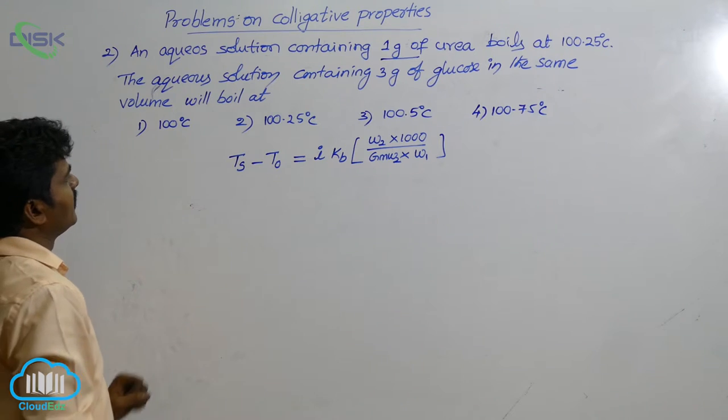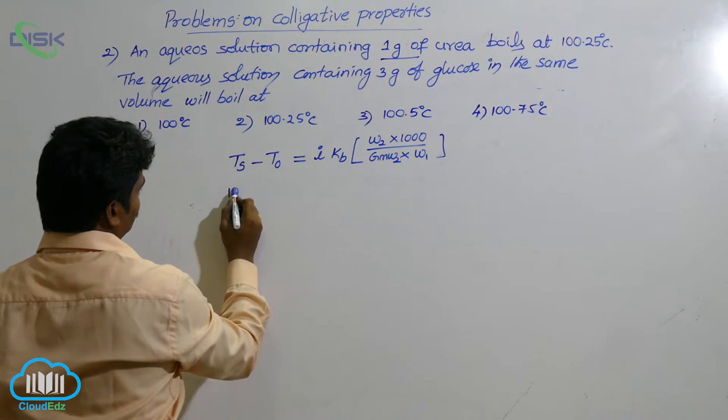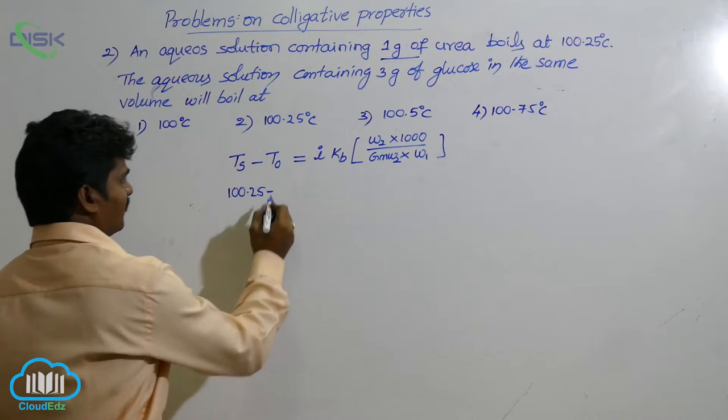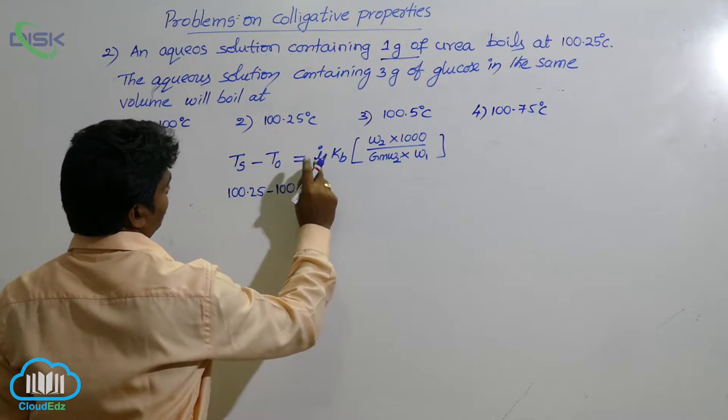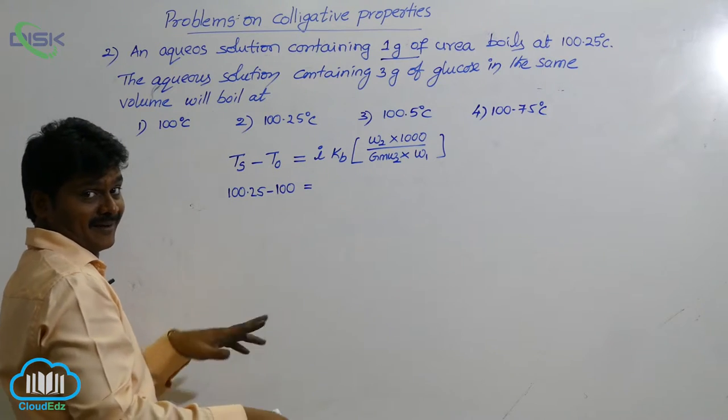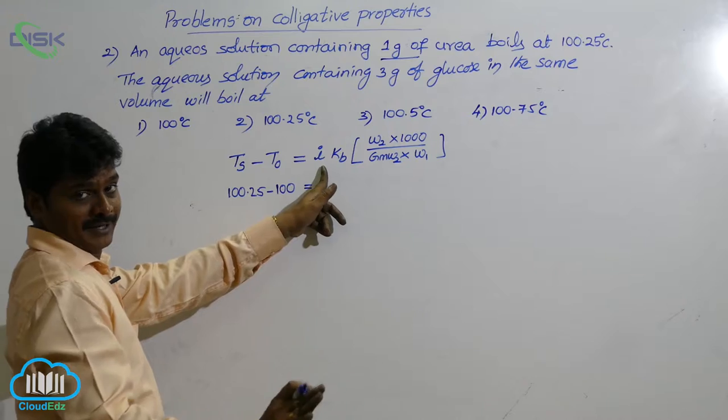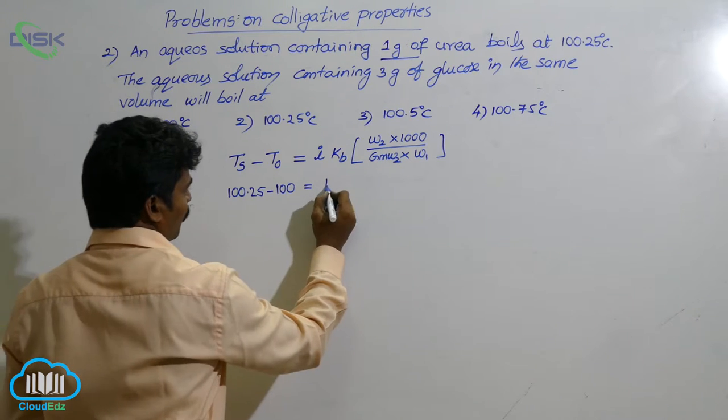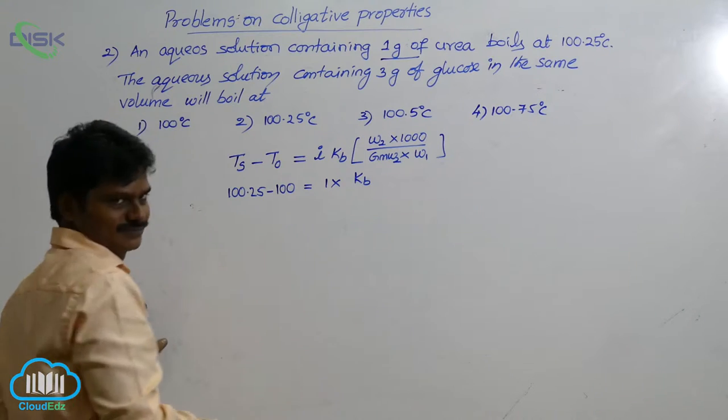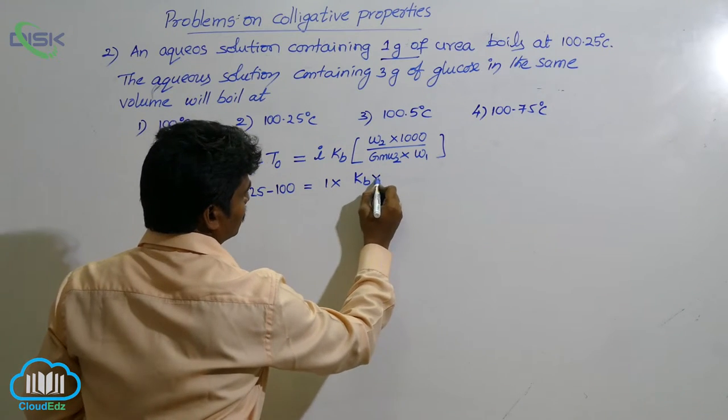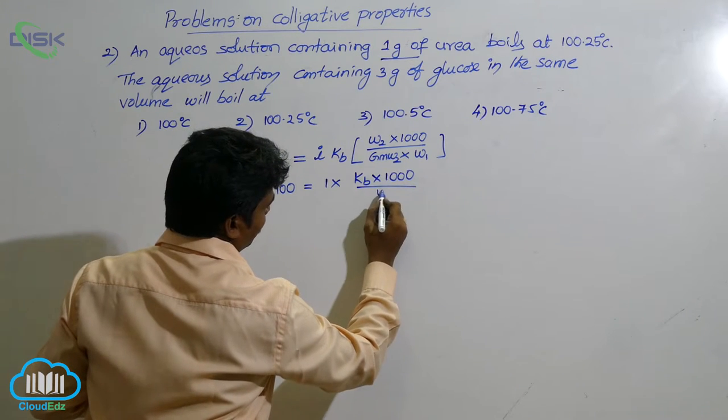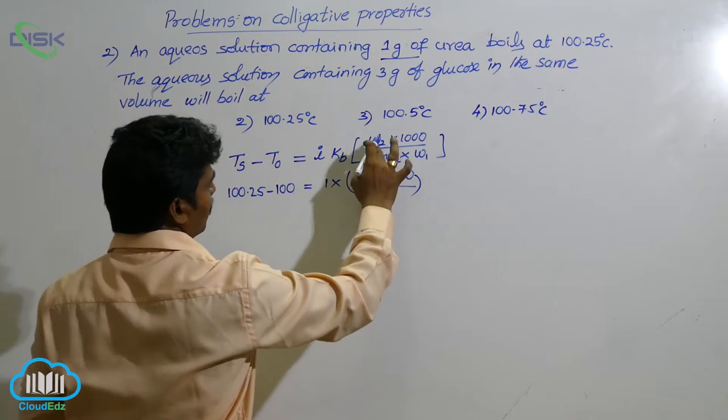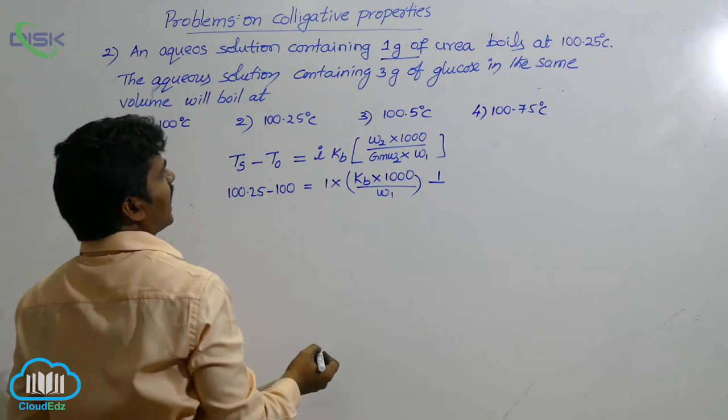In this, Ts is given. What is the value? 100.25 minus T naught means boiling point of pure solvent which is 100. Van't Hoff factor - this is the modified expression by Van't Hoff factor must be in every equation. So Van't Hoff factor i for urea - urea is a non-electrolyte, so Van't Hoff factor of 1. KB value we don't know, W1 also we don't know. Take KB into 1000 by W1 outside.